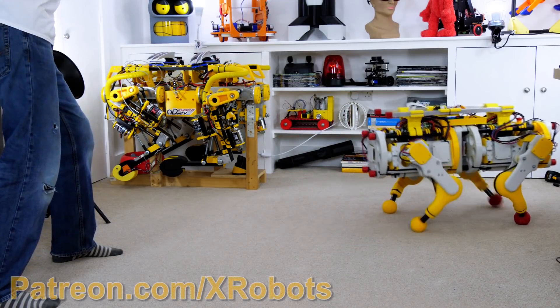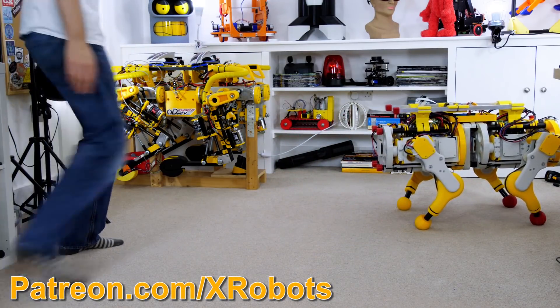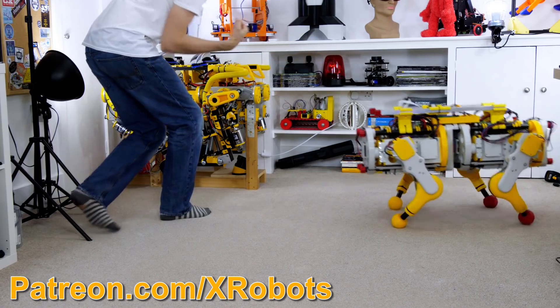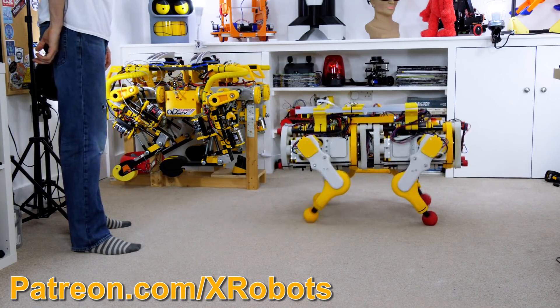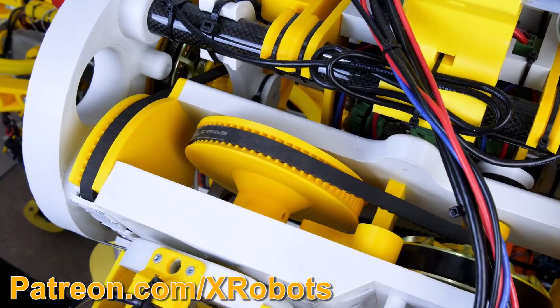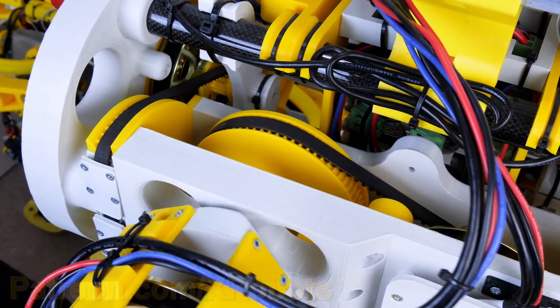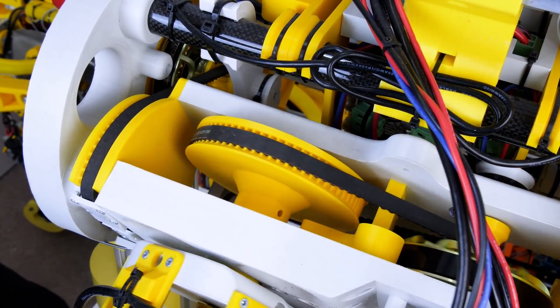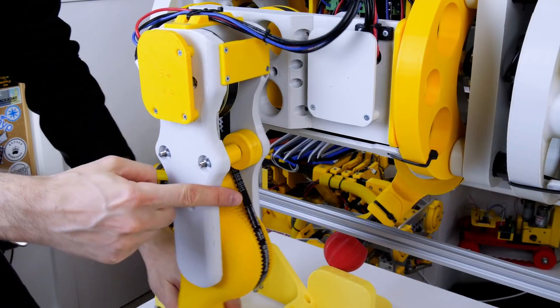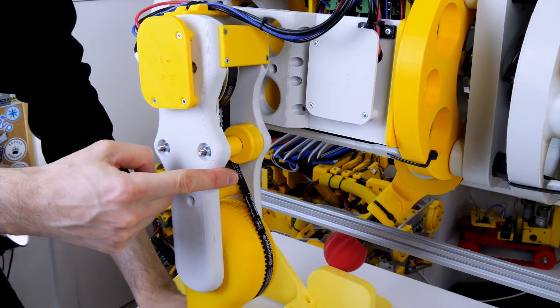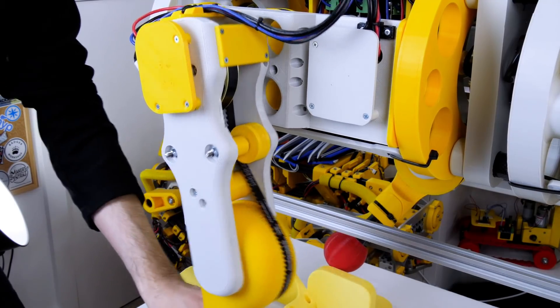The current version of my robot dog, Open Dog Version 2, uses belt reductions from the motors to the leg joints. Belt drives are very easy to build because all the parts can be 3D printed. The belt grips on multiple teeth and therefore spreads the load across multiple parts of the print. Provided the belt can be tensioned correctly with idlers so it doesn't slip, this makes a reliable drivetrain.